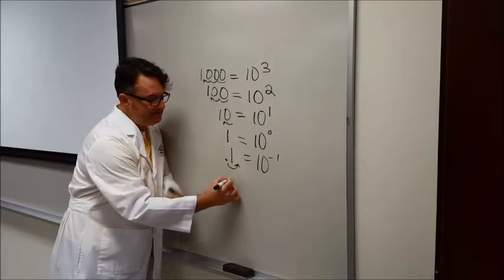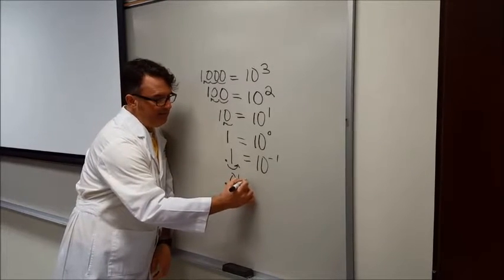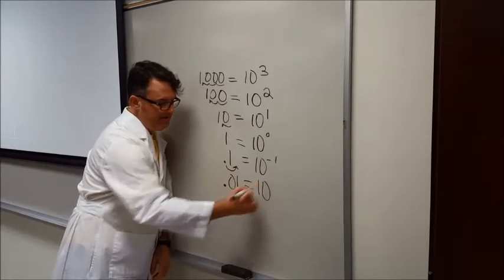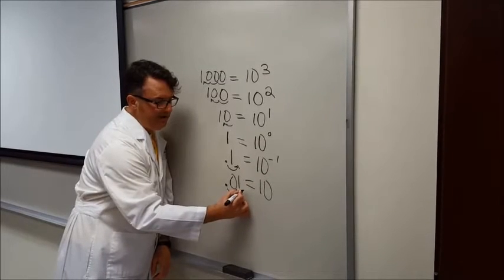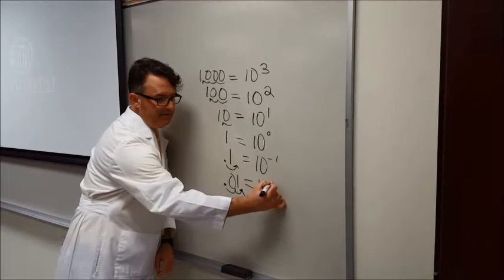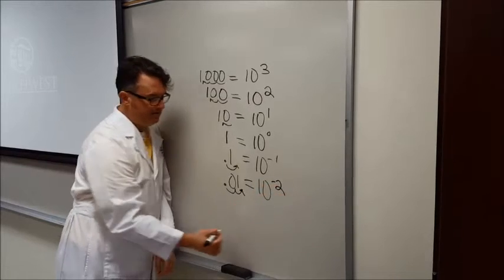Okay, what if I had this right here? What if I had 0.01, 1, 2, I moved it two places, then it would be 10 to the negative 2.